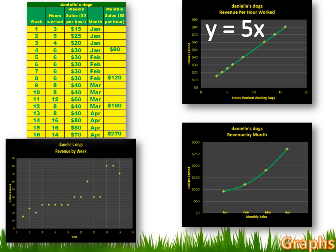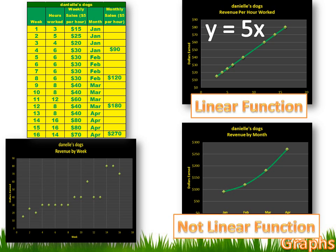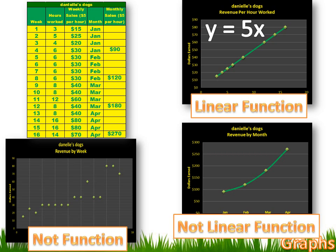These are three examples of three different kinds of graphs and three different kinds of relationships. The first one is a linear function — there's a constant rate of change between X and Y. The second one is a nonlinear function — there's a predictable pattern, but it's not a straight line. And the third one is not a function at all — it's a relationship, but it's not a function.